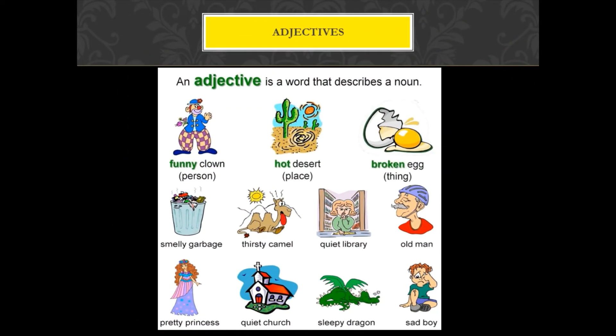What are adjectives? Adjectives are describing words. An adjective is a word that describes a noun. For example: funny clown — we are talking about a person, funny describes him. Hot desert — a place. Broken egg — a thing. How is this clown? Funny. How is the desert? Hot. What has happened to the egg? It's broken. So it is describing these nouns.